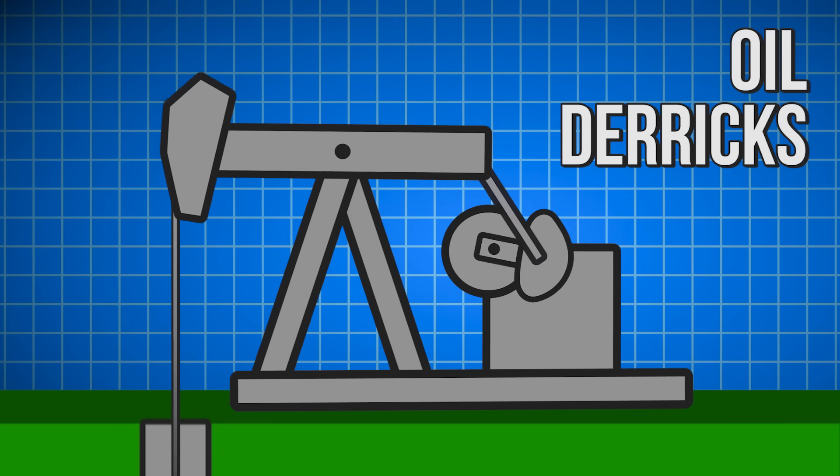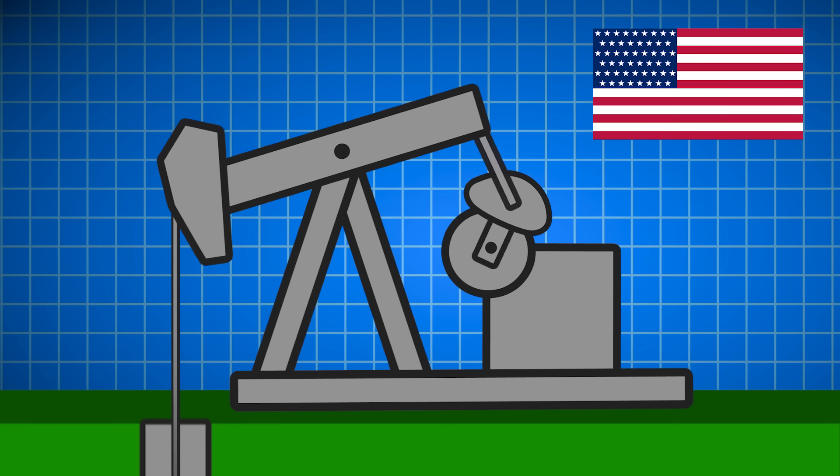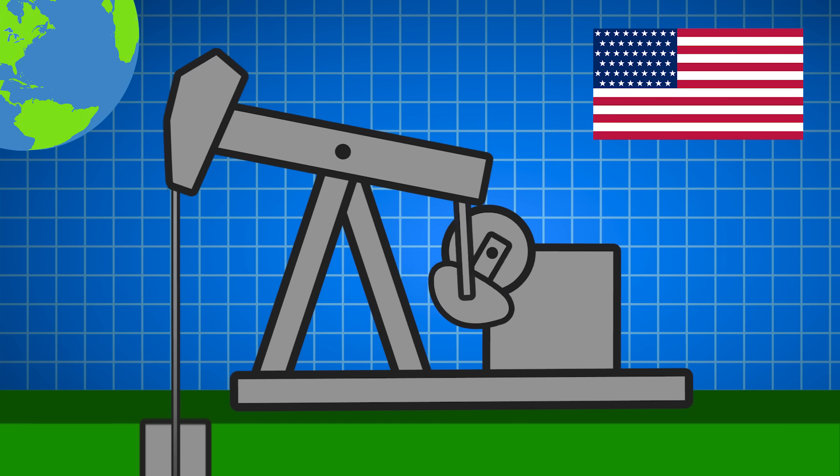Called pump jacks, oil horses, or oil derricks, these large metal structures are crucial to supplying the US and ultimately the world with its oil needs.